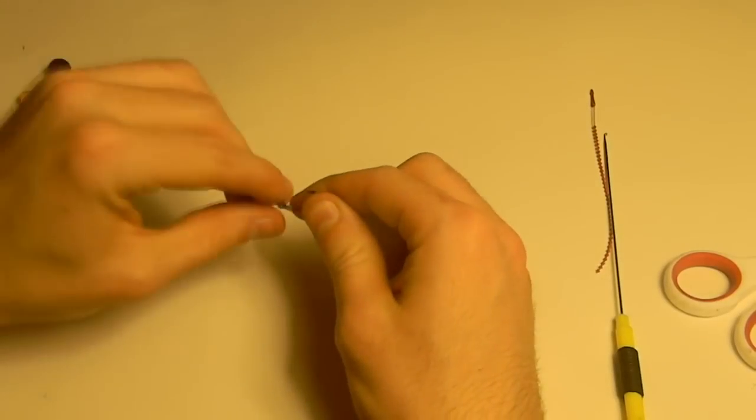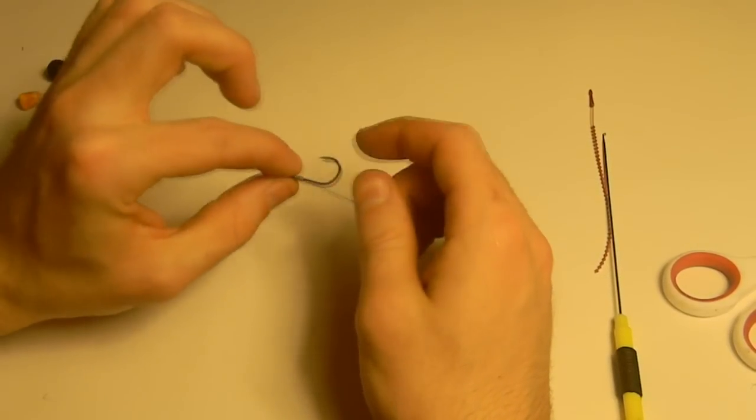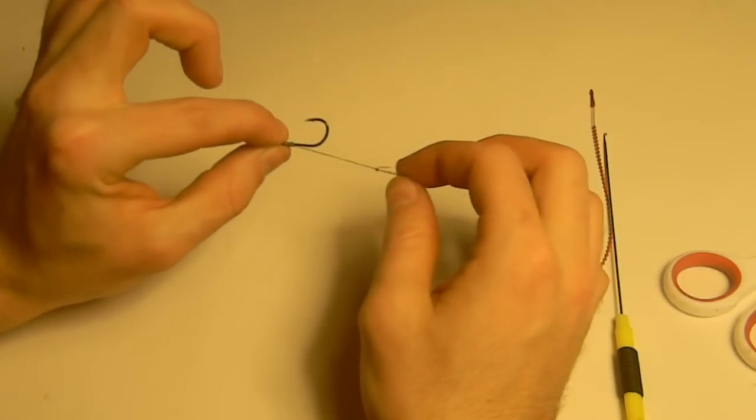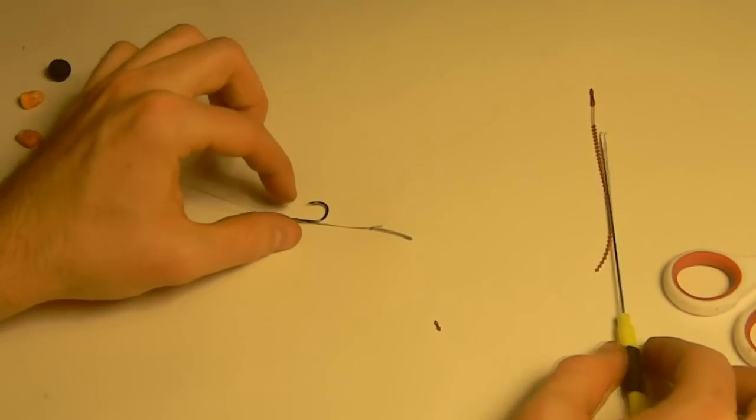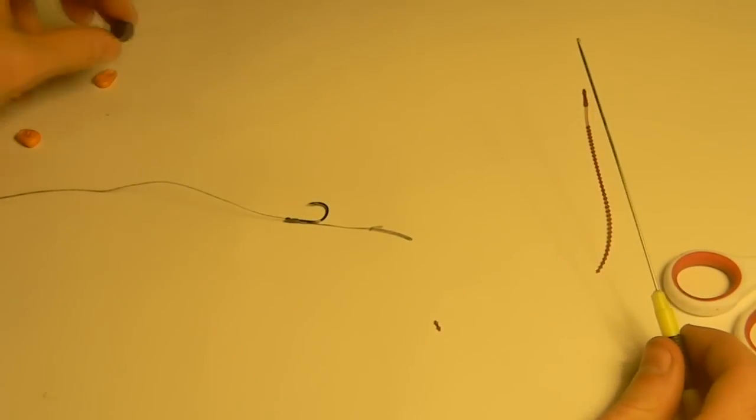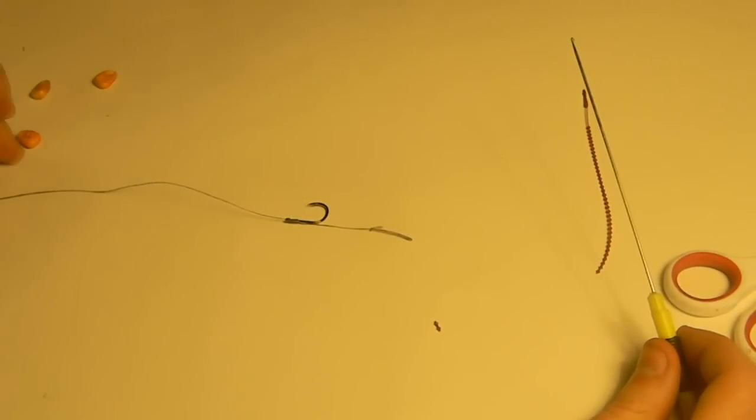So now what we have is a line with a knotless knot to a hook and a hair. Your next step is going to be adding your bait. For this video, I am going to use a pop-up boilie. Again, you're going to use corn, boilies, or whatever you're tending to use.